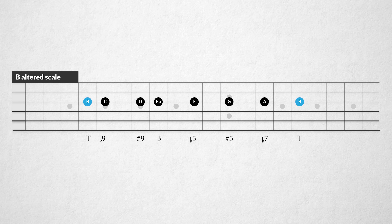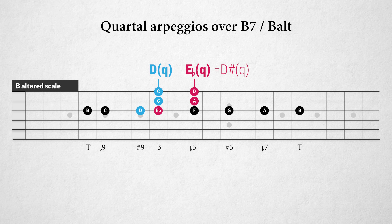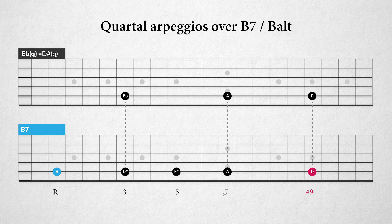Over the B dominant 7 or B altered chord, we can use the quartal arpeggios of the B altered scale, which is the same as the C melodic minor scale starting on the note B. This scale is great to play over dominant or altered chords. The quartal chords in the B altered scale on the 3rd degree D and the 4th degree E flat work very well. The D quartal chord contains the sharp 9 D, the sharp 5 G, and the flat 9 C. The E flat quartal chord contains the major 3rd D sharp, the minor 7th A, and the sharp 9 D.